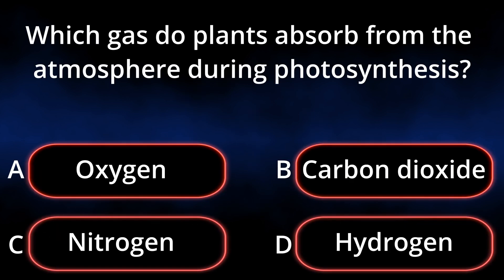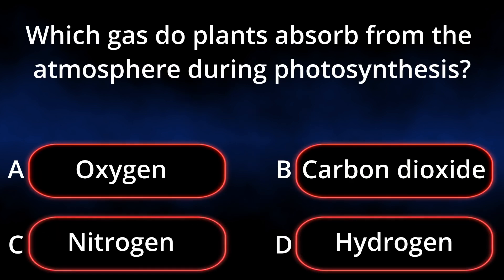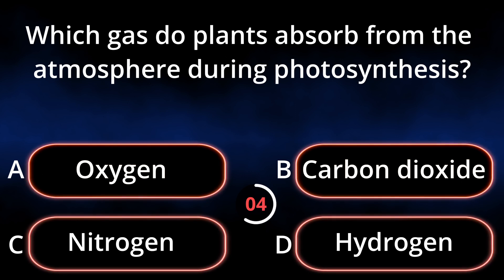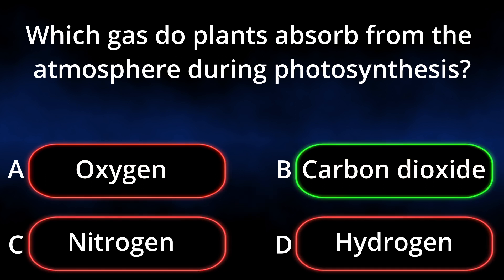Which gas do plants absorb from the atmosphere during photosynthesis? A. Oxygen. B. Carbon Dioxide. C. Nitrogen. D. Hydrogen. Answer: Carbon Dioxide.